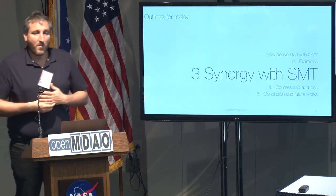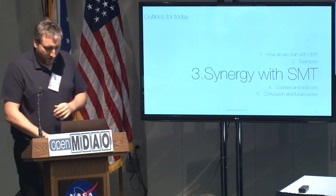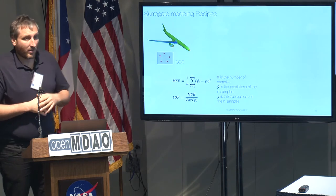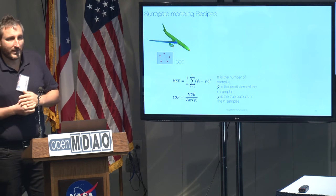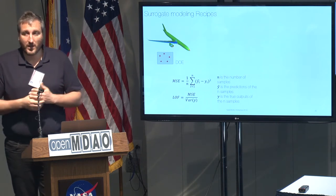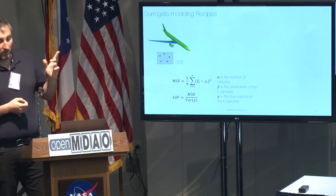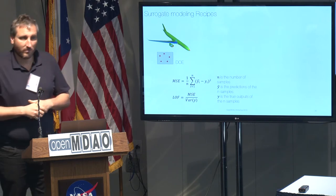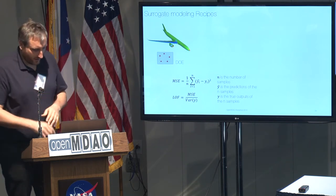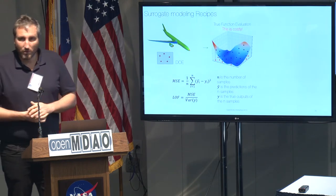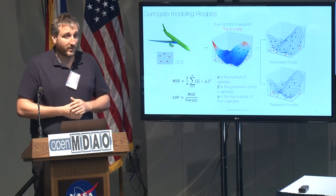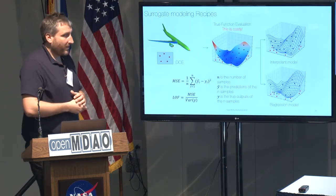I'll show how we do our optimization using surrogate modeling — there are some capabilities in OpenMDAO, but here are the key recipes. First, have a good design of experiments, especially with many design variables. In SMT we have a nice Latin hypercube sampling even at high dimension. The DOE starting point is itself an optimization problem, so you need a good initial sample. Then you evaluate the true function, which is costly, and choose between an interpolant or a regressive model depending on the application.